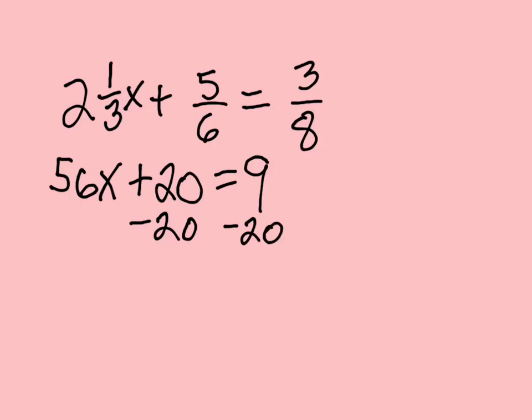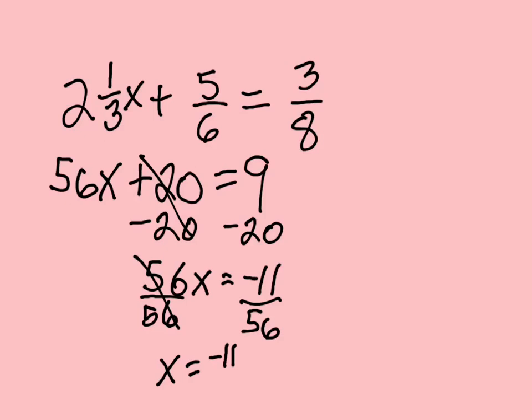And now we can solve this. Subtract 20 from both sides, and I get 56X equals negative 11. And so then divide both sides by 56, and I get X equals negative 11 over 56, which seems really much easier than doing this first problem. I want you to remember that this problem and this problem are equivalent problems. All we did was fraction bust, and I sure would rather do the second problem than the first problem.